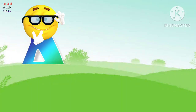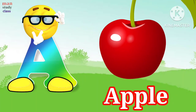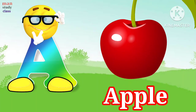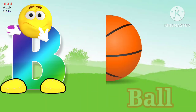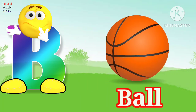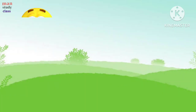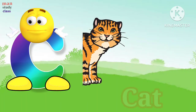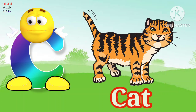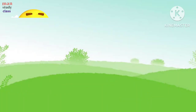A for apple, apple means shape. B for ball, ball means gained. C for cat, cat means billi.